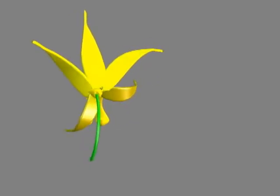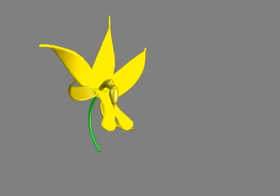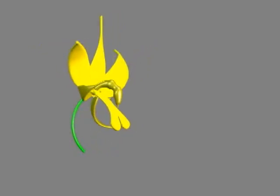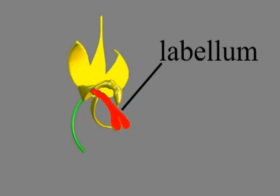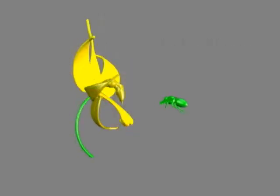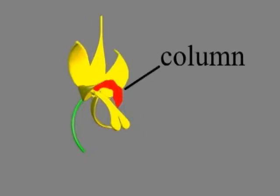This 3D model represents the Mormodes orchid and shares features and structures that are common to most orchids. The two features we are interested in are the labellum and the column. The labellum is a modified petal that often has a dramatic shape, and visiting insects land on the labellum.